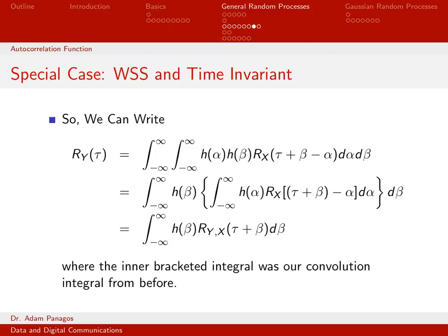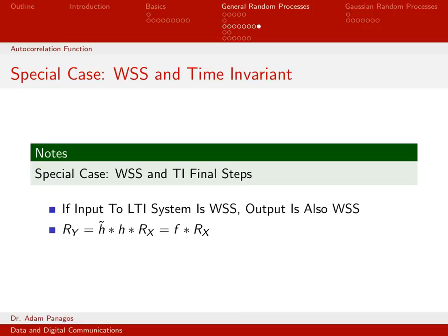Now we're very close to a final expression for the output autocorrelation function. At this point, r_y(τ) equals a single integral expression. We'll work on that integral expression in the next video, doing the math to arrive at a compact autocorrelation function expression.